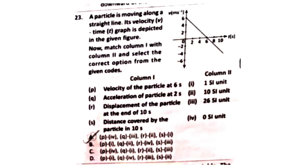Question 23: A particle is moving along a straight line. Its velocity-time graph is given. Match Column 1 with Column 2 and select the correct option. The answer will be discussed in the comment box.